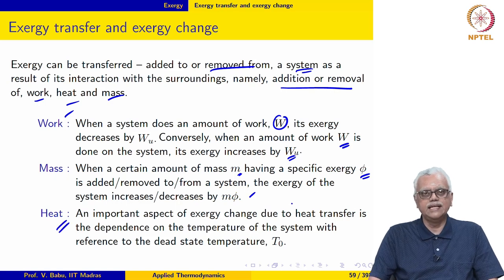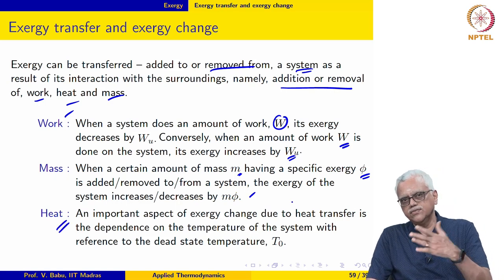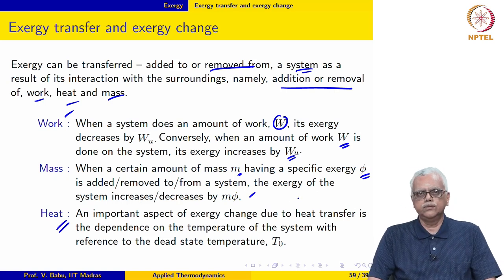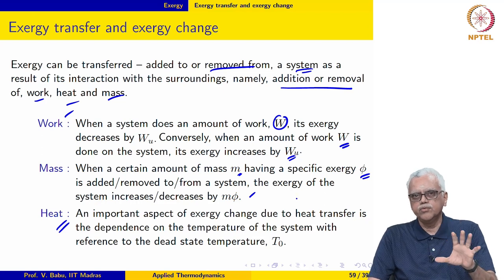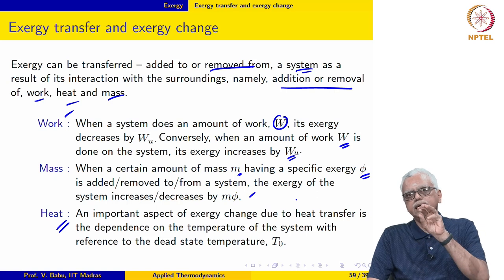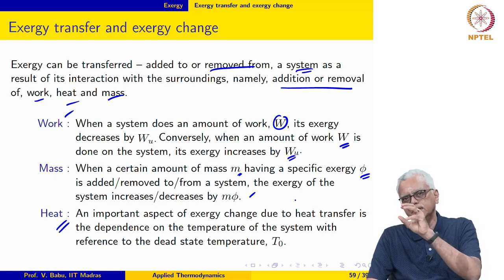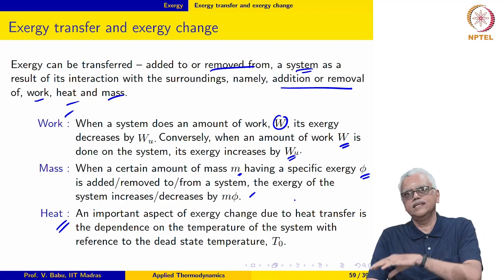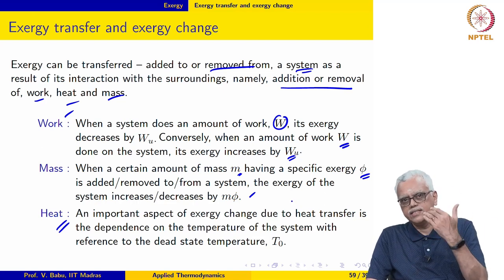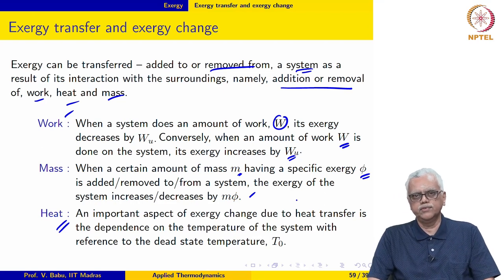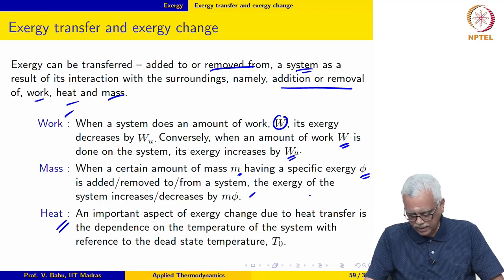When it comes to heat interaction and transfer of exergy through a heat interaction, we have to be somewhat more careful. Depending upon the temperature of the system with respect to the ambient temperature — whether the system temperature is greater than or less than T₀ — the direction of heat flow and exergy flow can be opposite to each other. That is what we will take a close look at next.